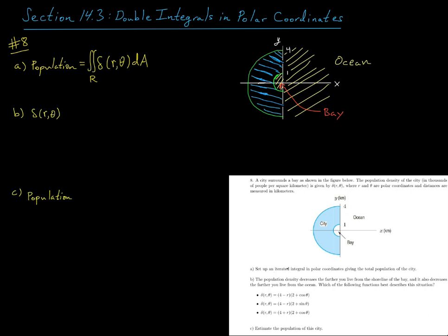Okay, so now part A says to set up an iterated integral. So to do that, if we're going to use polar coordinates, then we're going to let theta range from pi over 2 to 3 pi over 2, and then r is going to range from 1 to 4.